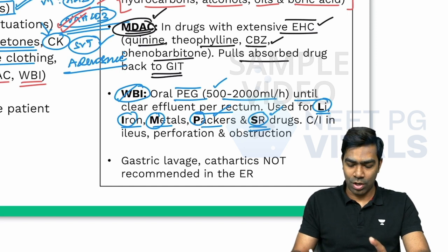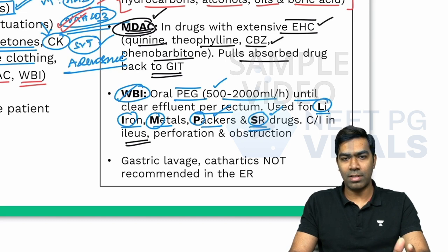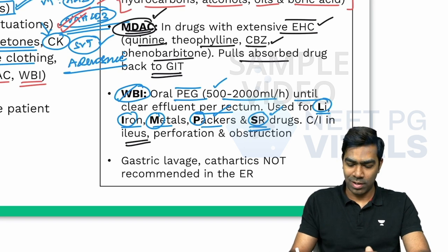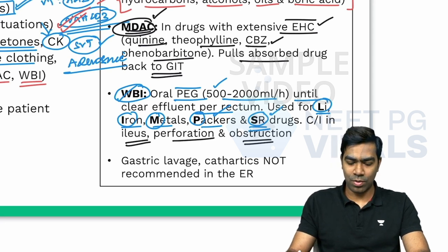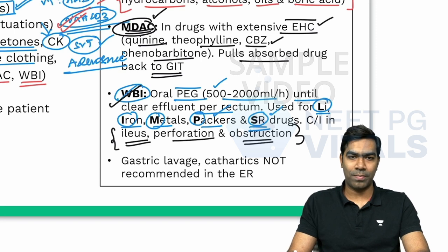Contraindications for whole bowel irrigation: in suspected ileus — if the gut is not moving properly or at all — whole bowel irrigation is contraindicated, as the PEG will stay in the gut and not come out. It is also contraindicated in suspected gastrointestinal perforation or obstruction, whether small bowel or large bowel. These are general contraindications for any GI decontamination procedure.